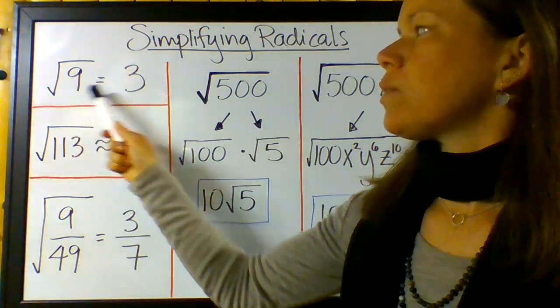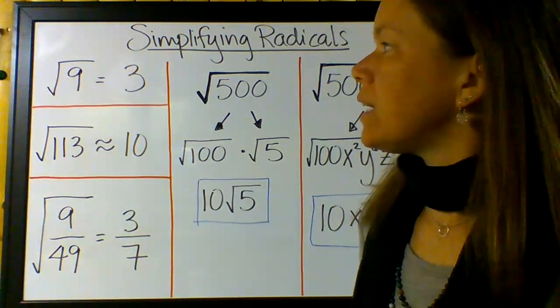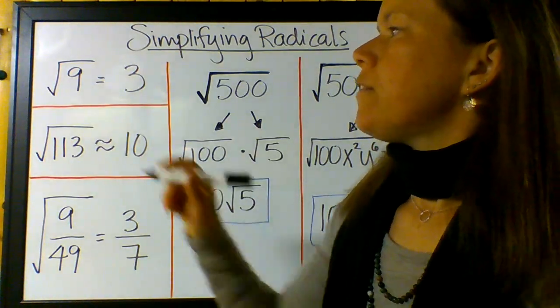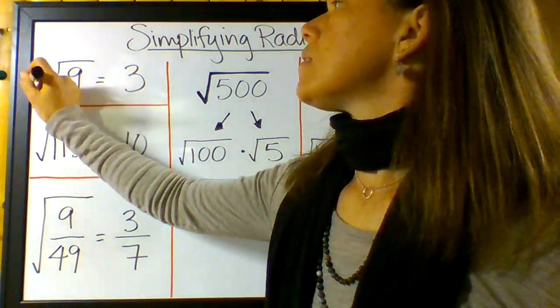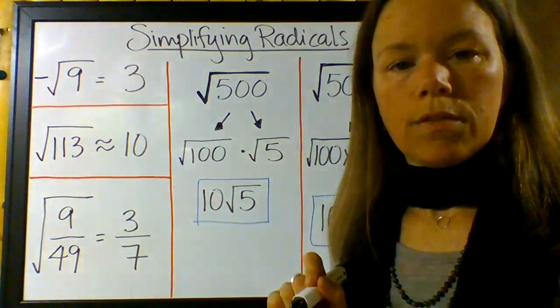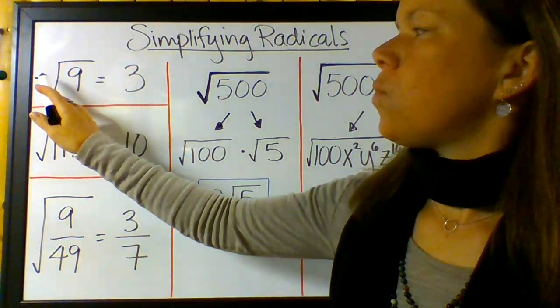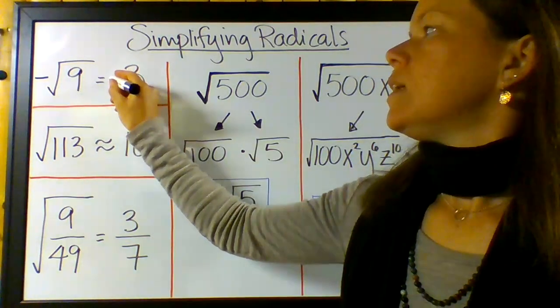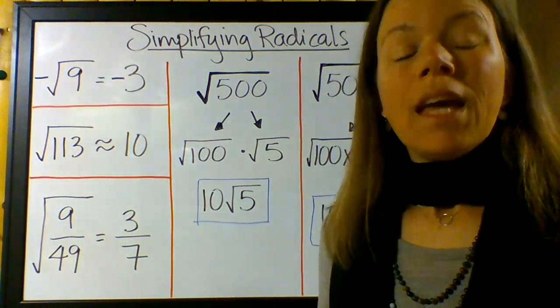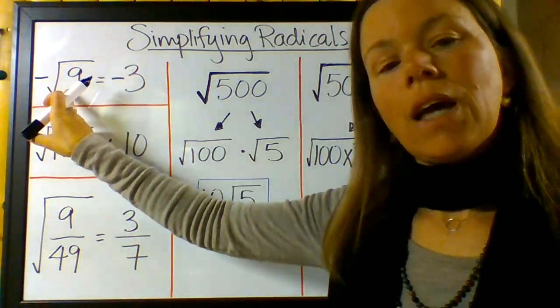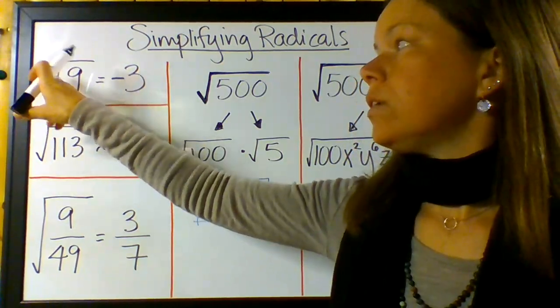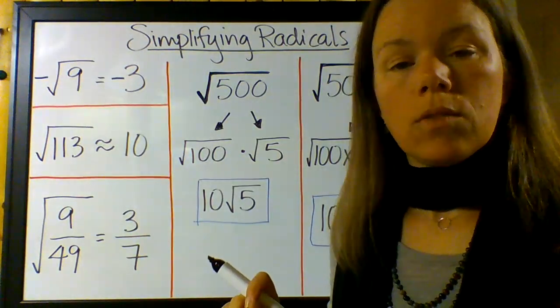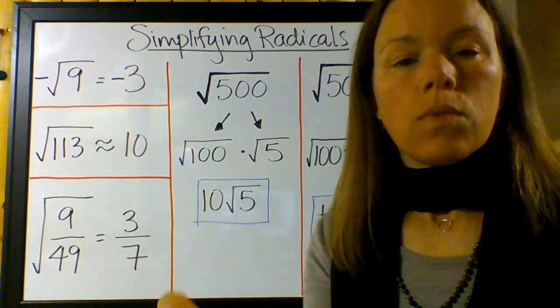So we know that the square root of 9 equals 3, right? The square root of 9 is 3. And in fact, we could also know that if I put a negative, like a minus in front of this here, negative square root of 9, this is like negative 1, there's an invisible negative 1 here, times the square root of 9, which would give me negative 3. Now there's no such thing as a square root of negative 9 under the radical. This thing is called the radical, but we could put negative 1 times the square root of 9, which equals negative 3.